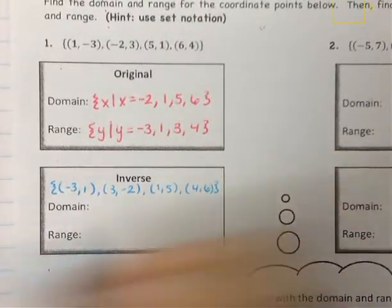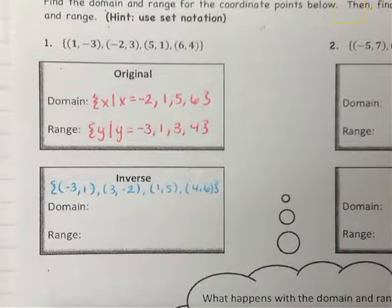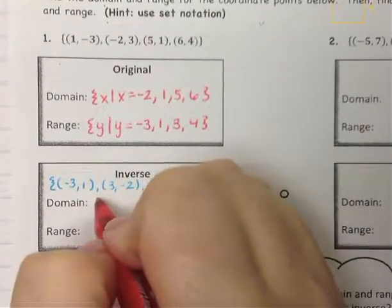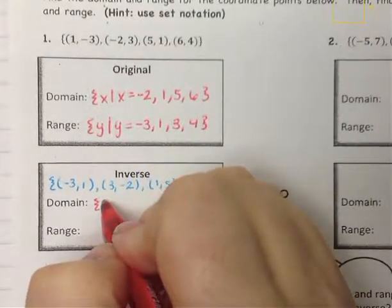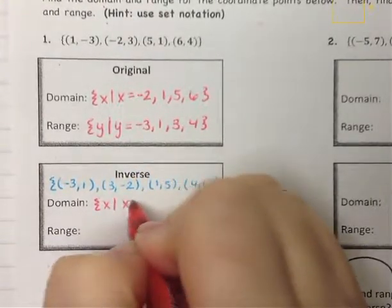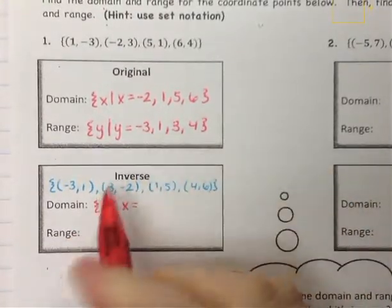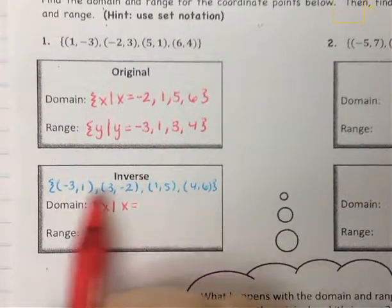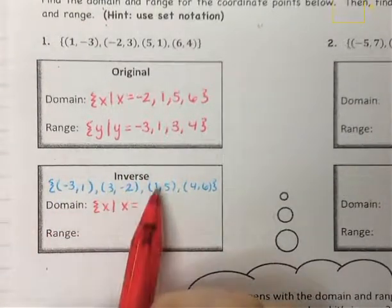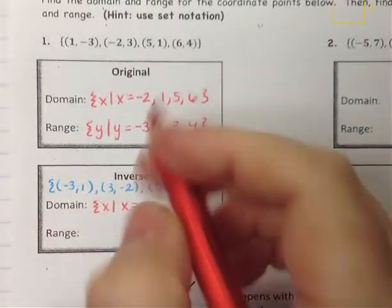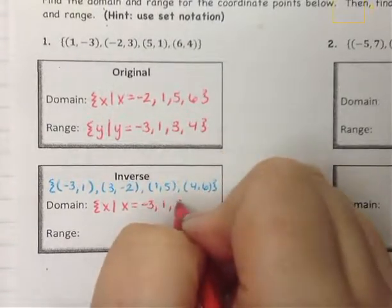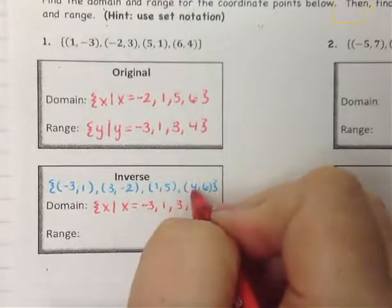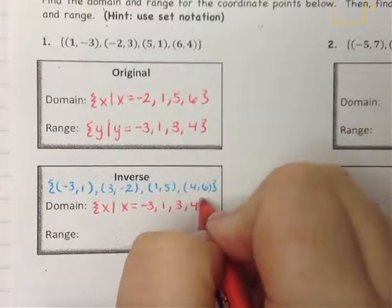Now that I have all the coordinates written out, we can write the domain and range. So the domain, squiggle bracket, x such that x is equal to — the new x values are negative 3, then 1, then 3, then 4. Sorry, that was a 4, not a 5, is what I meant to say.